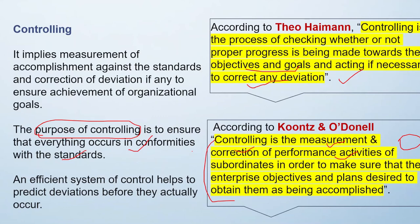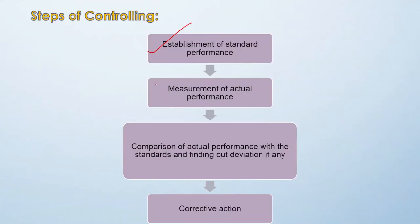The steps of controlling: first, establish standard performance; second, measure actual performance; then compare actual with standard and see the deviation; and finally, take corrective action. These are the steps of controlling, and the sequence of these steps you have to remember.